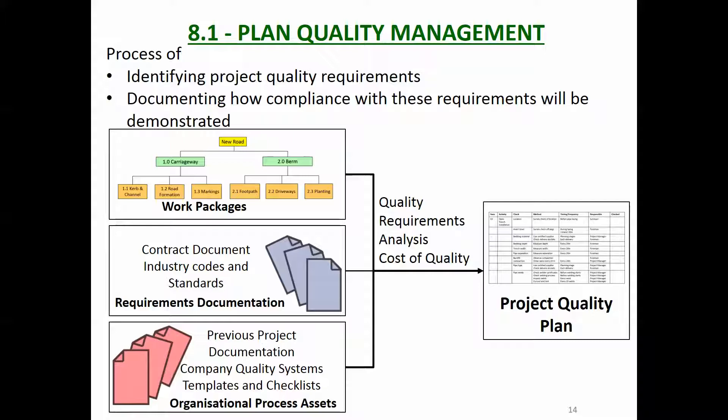Your company will have templates and checklists as part of the quality system, and it will also have its own quality systems processes — who does what, who does the inspection of the road, when do they do it. Most organizations will have quite a substantial amount of documentation telling you how to do quality management. You take all that information, assess the quality requirements, figure out the cost of quality and what inspections you need to do, and what you come out with is the project quality plan.